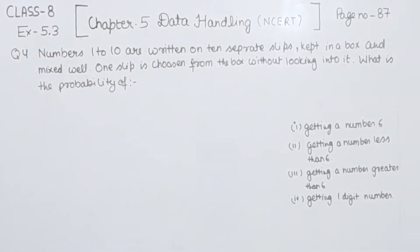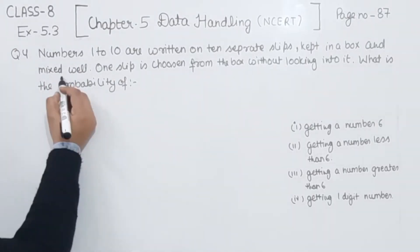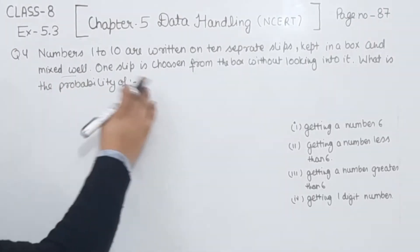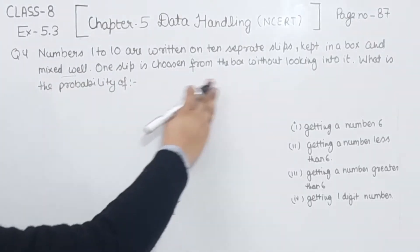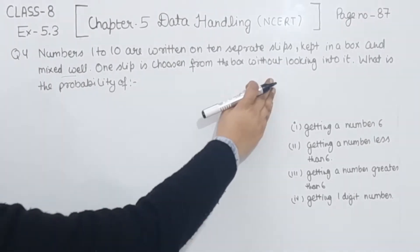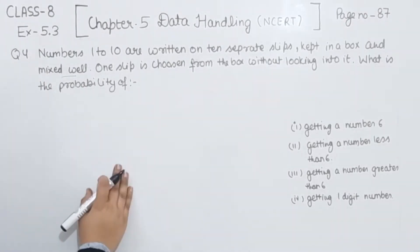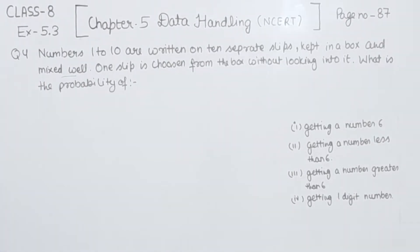Numbers 1 to 10 are written on 10 separate slips, kept in a box and mixed well. One slip is chosen from the box without looking into it. What is the probability? So we are having 4 parts.